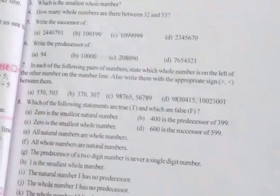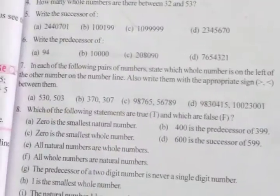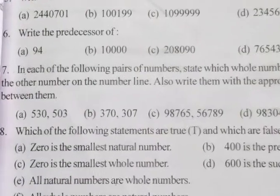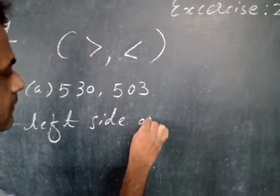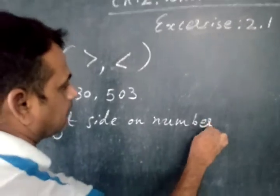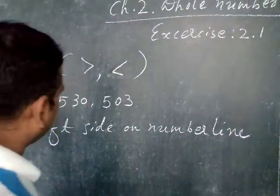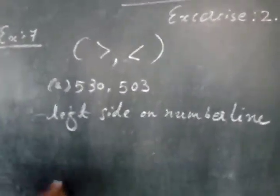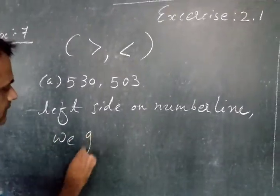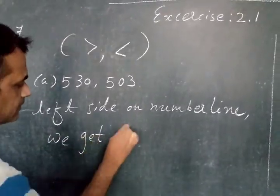Now see the first number: 530 and 503. We know that however we move on the left side of the number line, we get a smaller number.